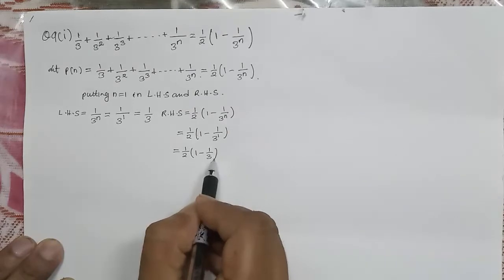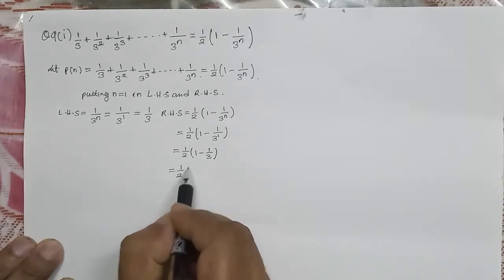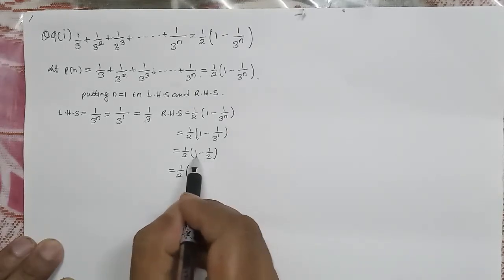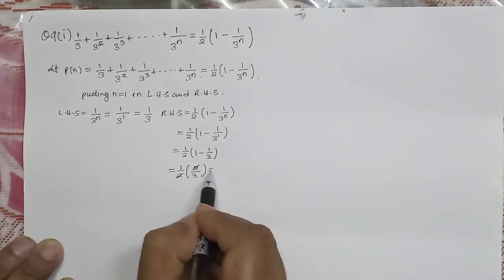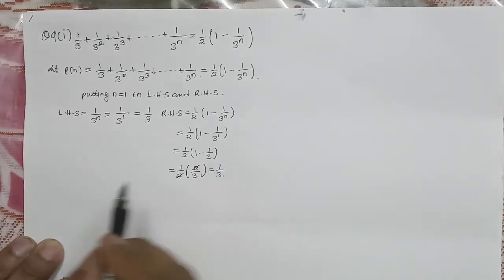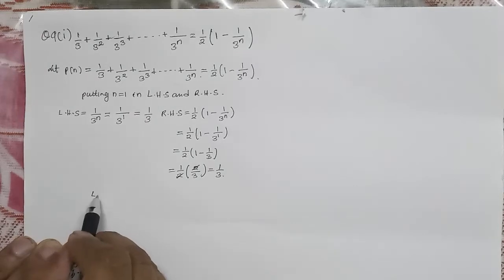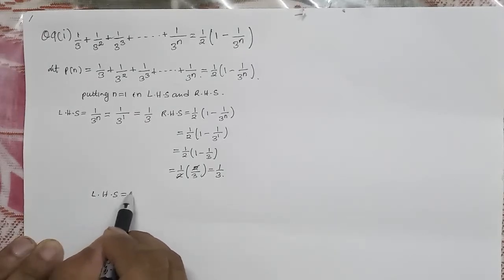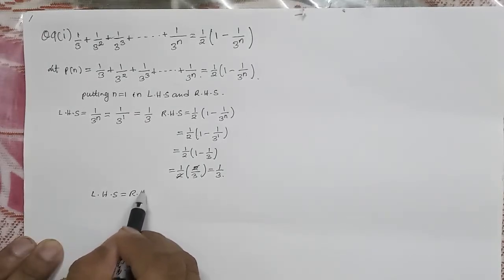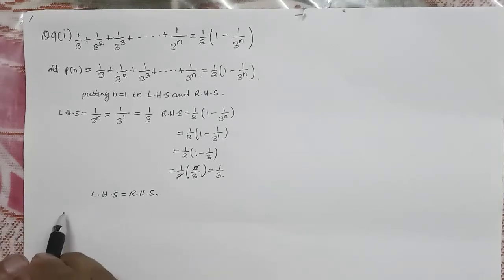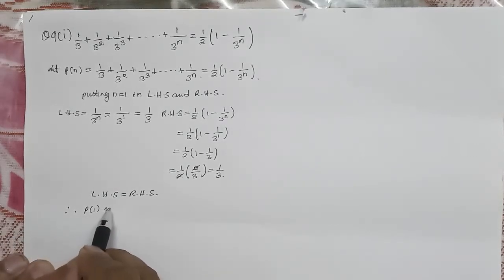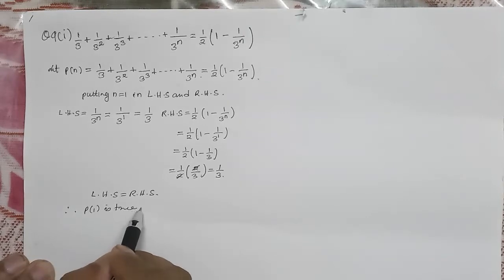Taking LCM as 3: (1/2) × (2/3) = 1/3. So LHS equals RHS, the first property is proved. Therefore P(1) is true.